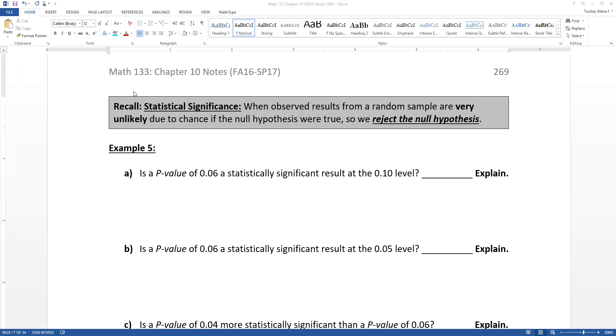So let's remember that statistical significance means that we're able to reject the null hypothesis. In other words we had observed results from a random sample that were very unlikely due to random chance if the null hypothesis were true.